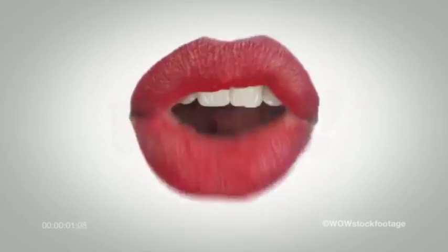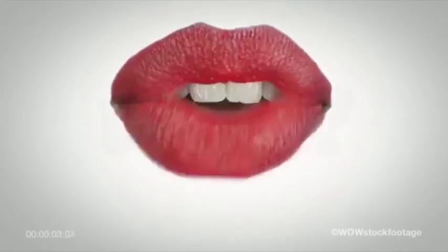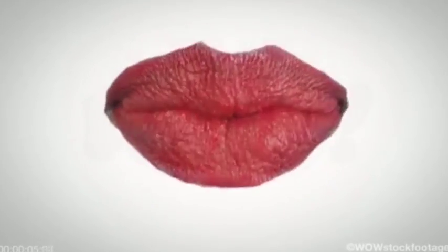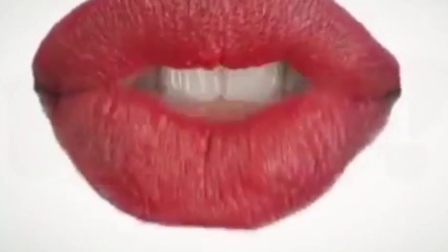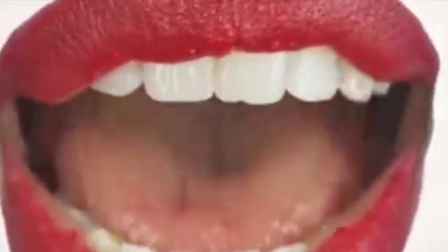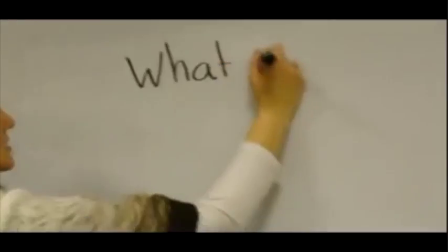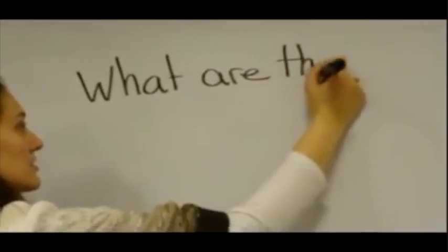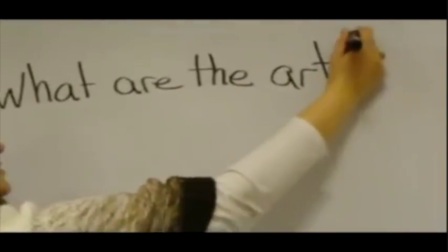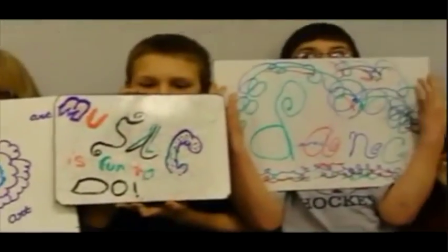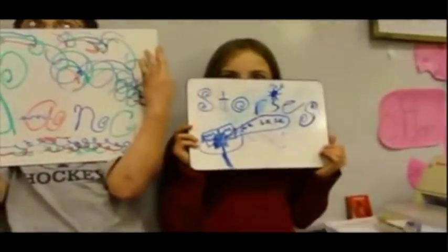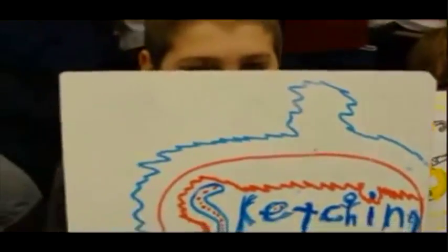Vygotsky viewed language as man's greatest tool — his means for communicating with the outside world. He believed that language develops from social interactions for communication purposes. In the classroom, teachers and students collaborate in learning and practicing four key skills: summarizing, questioning, clarifying, and predicting. The teacher's role in this process is reduced over time.